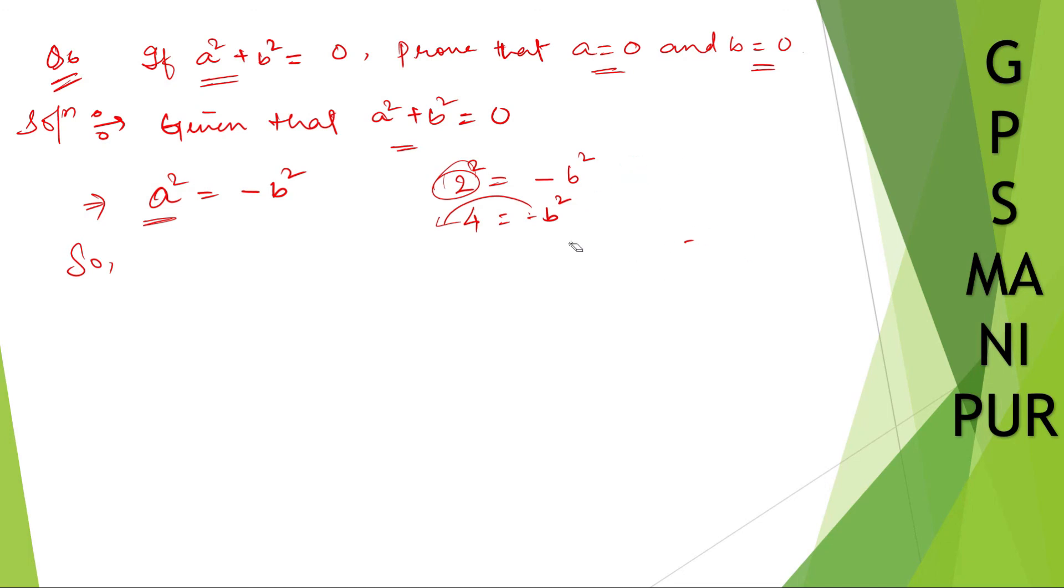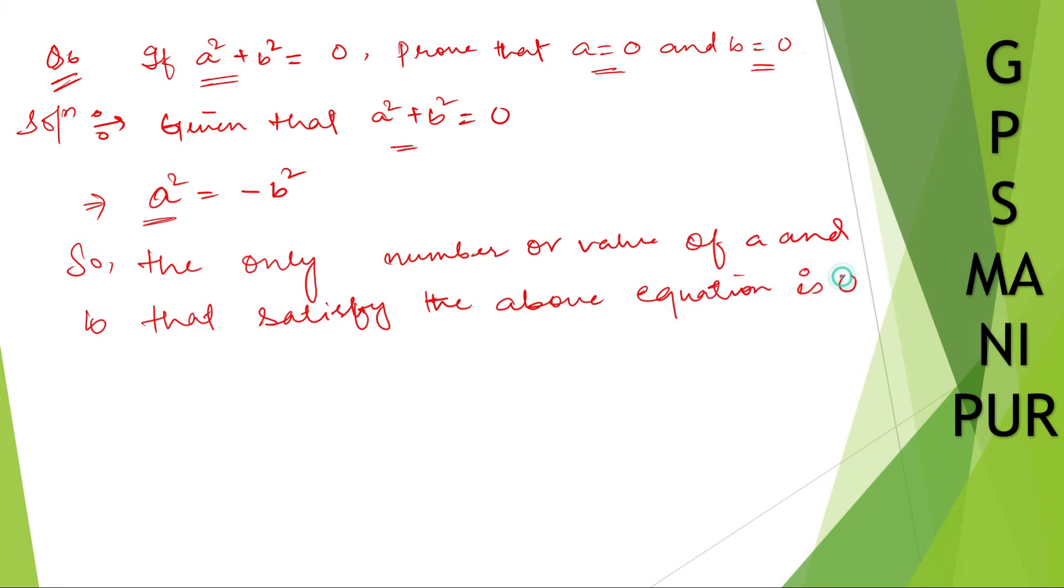The only number or value of a and b that satisfies the above equation is 0. There is no other number except 0 which can satisfy this equation.